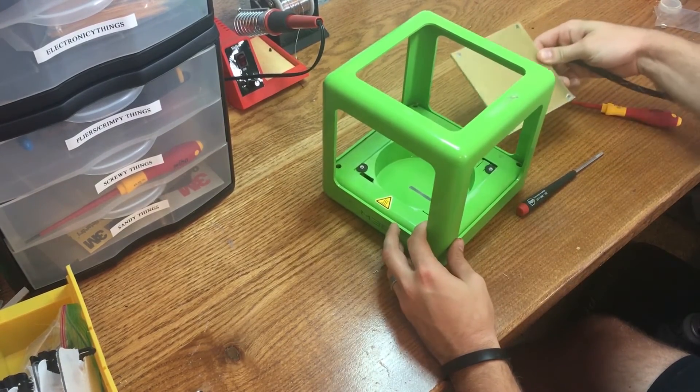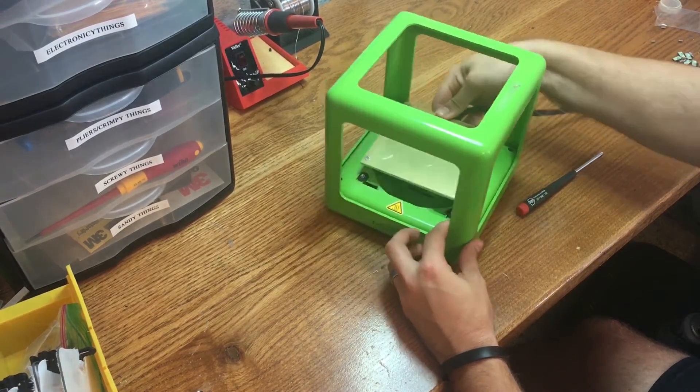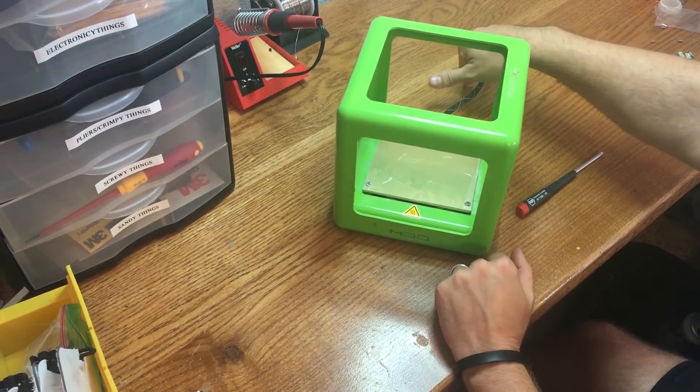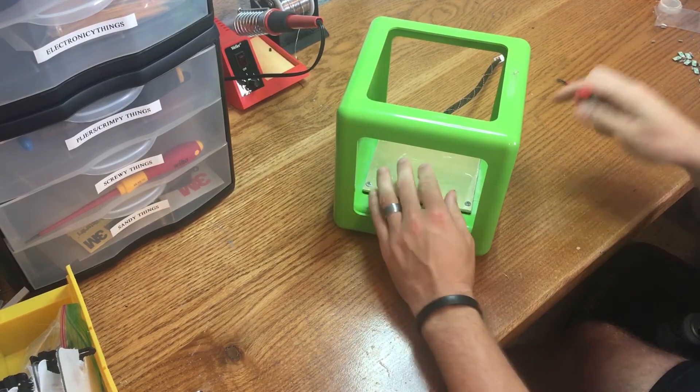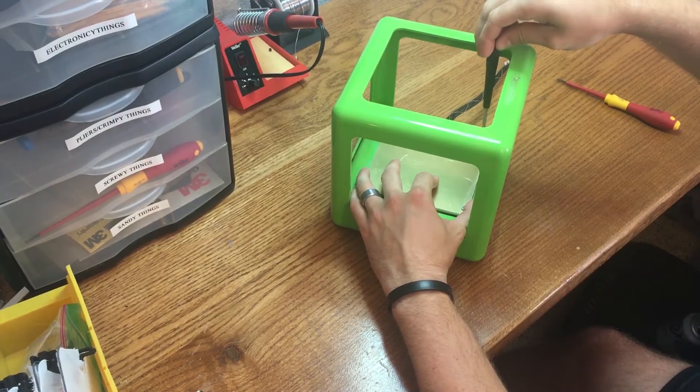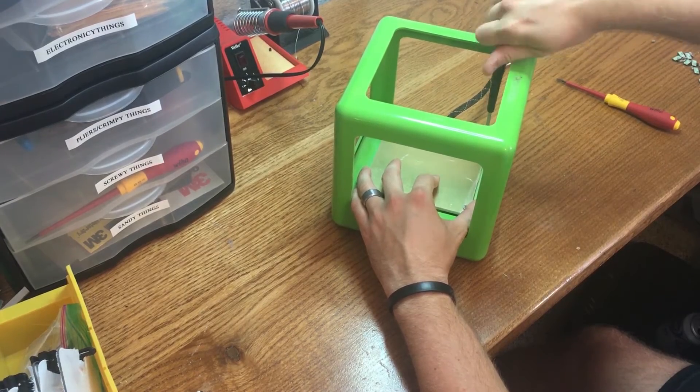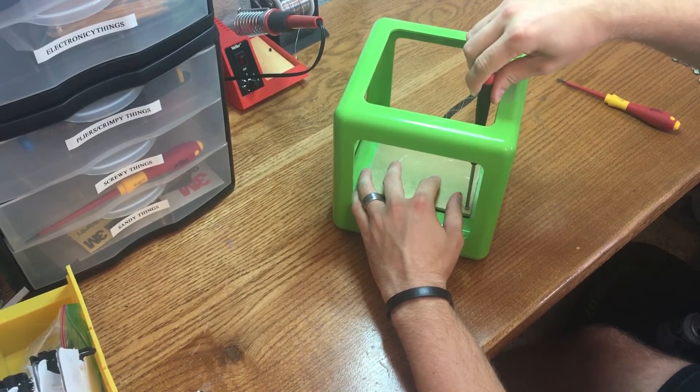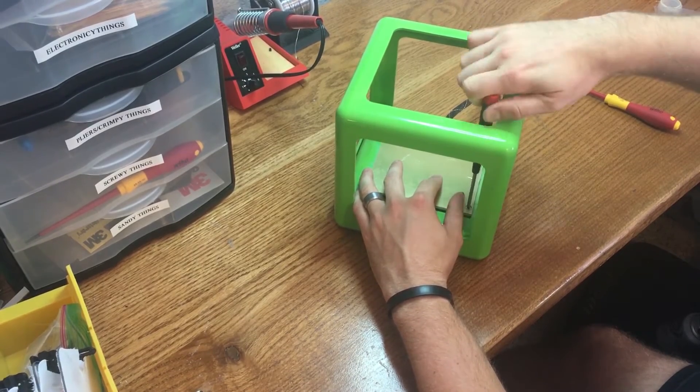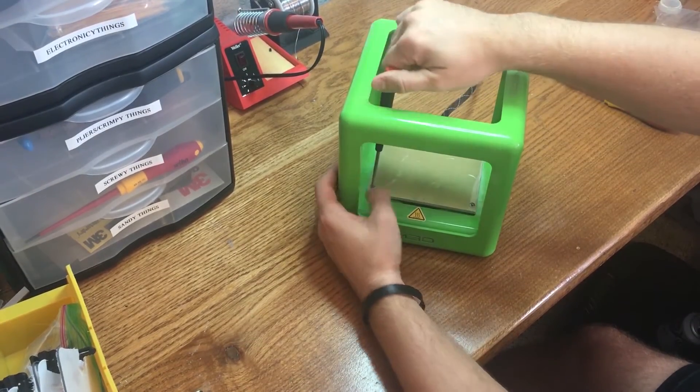What you're going to do is just slide it in with the wire coming out the back of the Micro, and then you'll take your Phillips head screwdriver and simply tighten the screws down in all four corners.